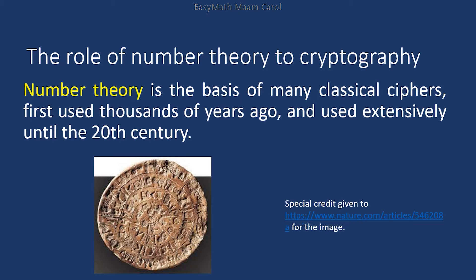What is the role of number theory in cryptography? Number theory is the basis of many classical ciphers first used thousands of years ago and used extensively until the 20th century. The image below shows it carved in stone, proving that the process of cryptography and number theory started thousands of years ago. Most of the time, it was used in wars and the conquest of other nations' territories, so that their messages would remain hidden and secret.